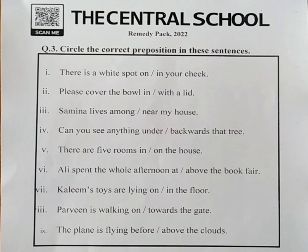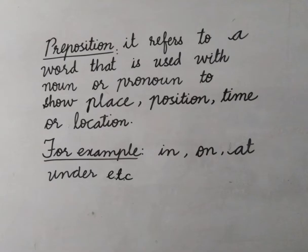Our question number 3 is: circle the correct preposition in these sentences. Before going to solve our question, first we will recall our concept of part of speech — preposition. Here we have the definition of preposition: it refers to the word that is used with a noun or pronoun to show place, position, time or location.